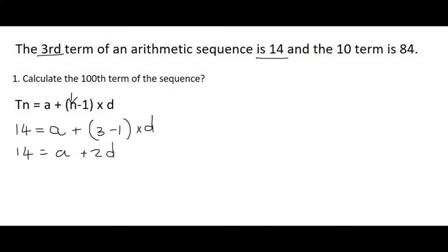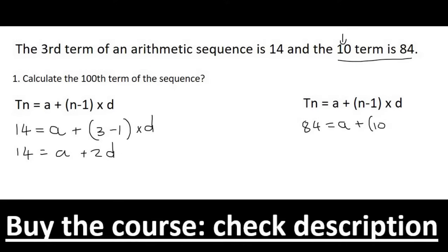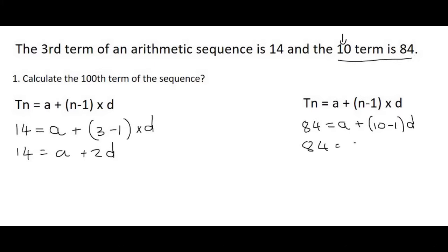Then we go to the next piece of information, which tells us that the 10th term is 84. So we make use of the formula again. The value is 84, A we don't know, they've told us it's term 10, so we say 10 minus 1, and the difference we don't know. So we end up with 84 equals A plus 9d.